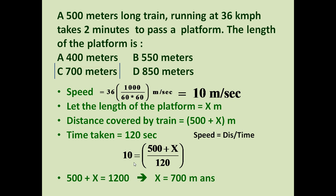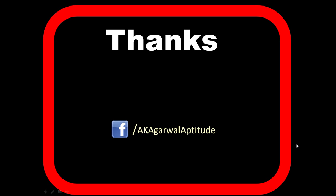So: 10 = (500 + x) / 120. Simplifying, 500 + x = 120 × 10 = 1200. Therefore x = 700 meters. The answer is option C — the length of the platform is 700 meters. Friends, thank you very much for watching this video. You can also follow me on Facebook.